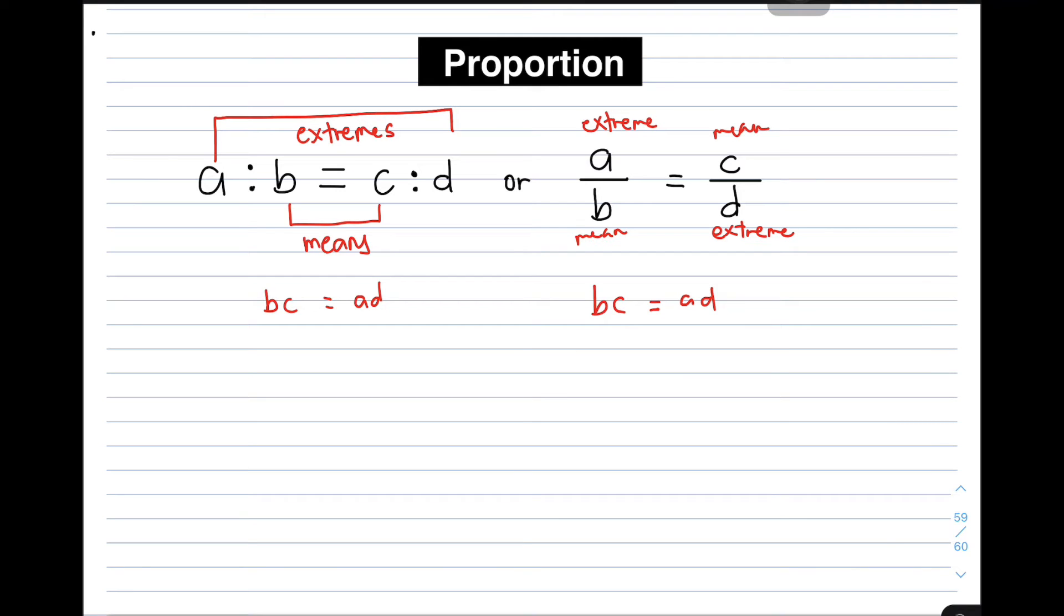For example, we have 1 is to 4 is equal to 2 is to 8. So let's try to multiply this one. Let's multiply our means, which is 4 times 2, it will give you 8. And then multiply our extremes, which is 1 times 8, it will give you also 8. So therefore, if the product of your means and the product of your extremes are equal, this ratio shows a proportion.